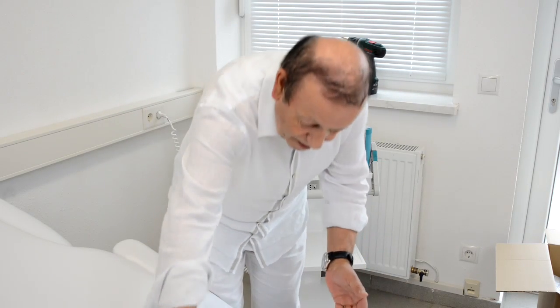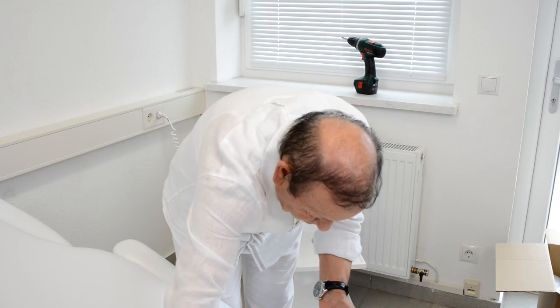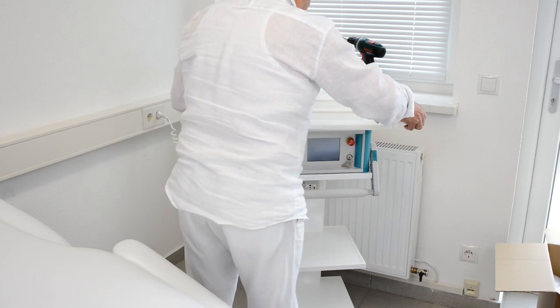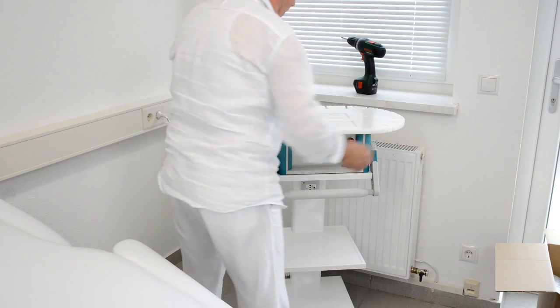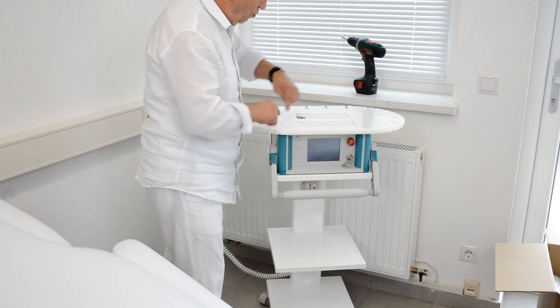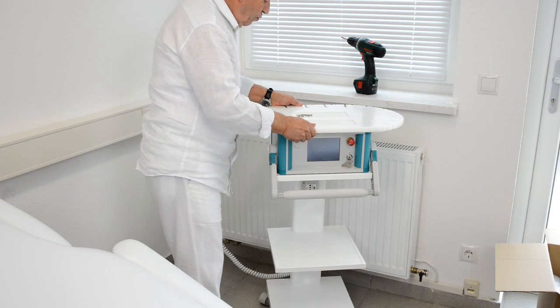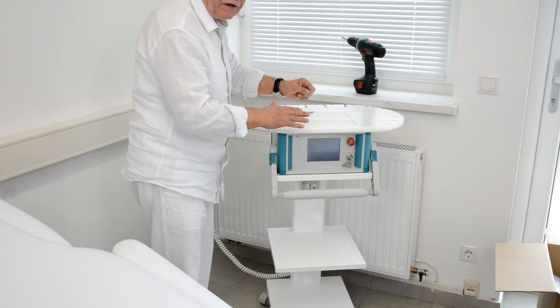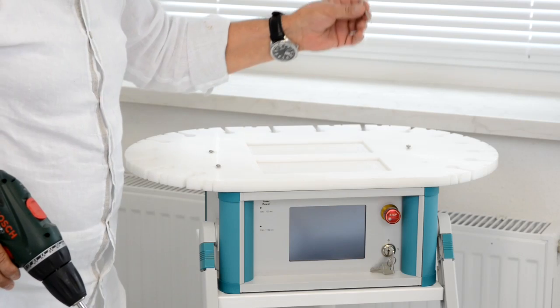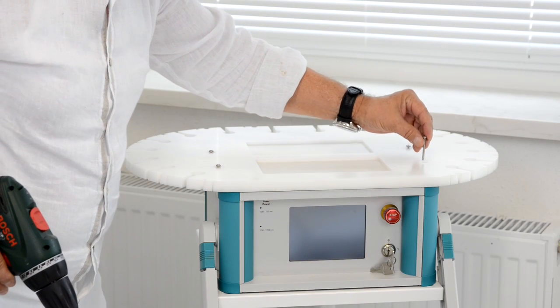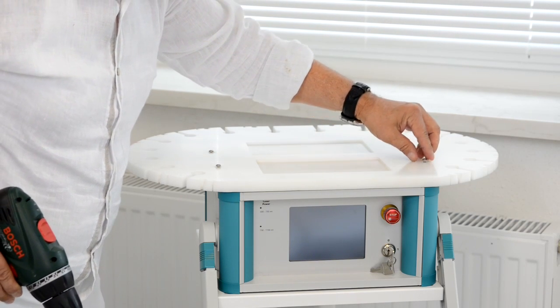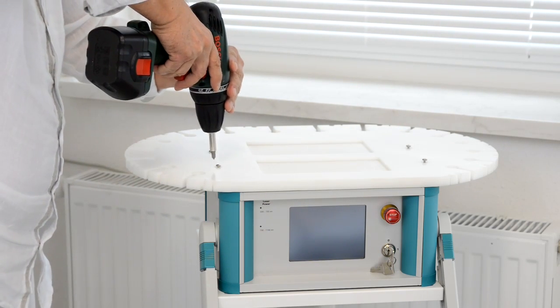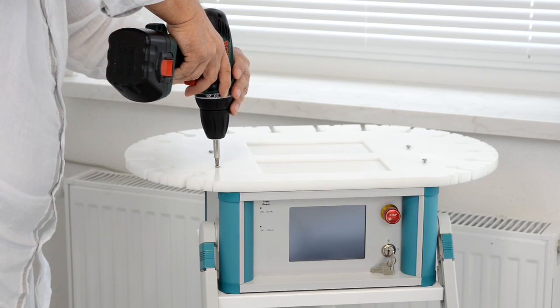In the next step I take the holder plate for the different laser models and we can put it on the device. You see there are four holes with which we can fix the holder plate with the screws on the device. Now we put in the screws directly over the holes in the electronic device and I fix them with this drill machine.